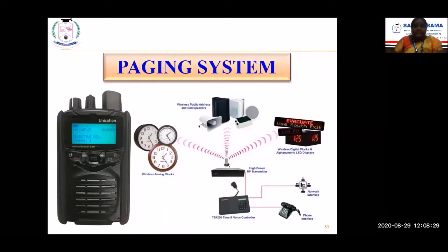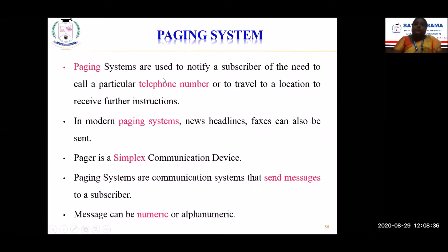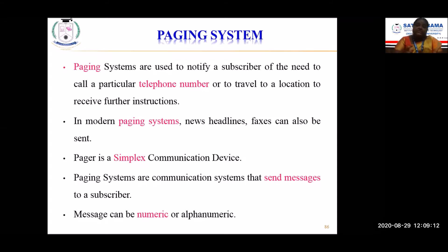Let us see in detail how the telephone line is used for sending information and messages. Paging systems are used to notify the subscriber of the need of a particular call being received to a telephone number, or to travel to a location to receive further instructions. In more modern paging systems, news headlines and faxes can also be sent. The pager is a handy instrument you can carry in your pocket within the coverage range. It is a simplex communication device, and paging systems send messages to subscribers — either numeric or alphanumeric.